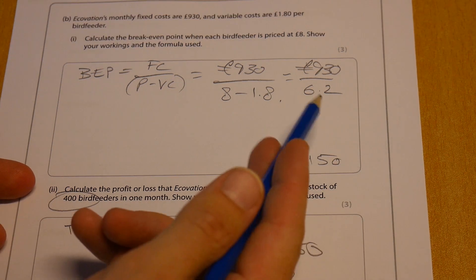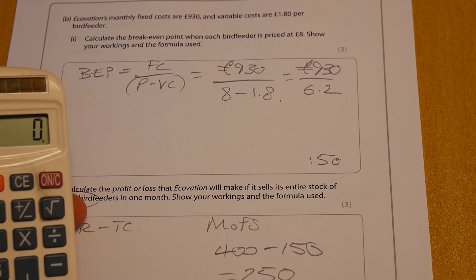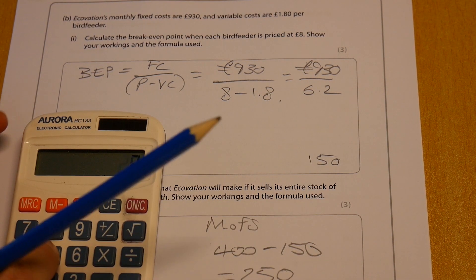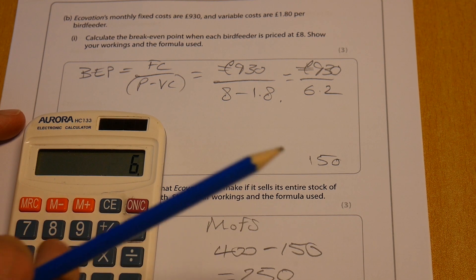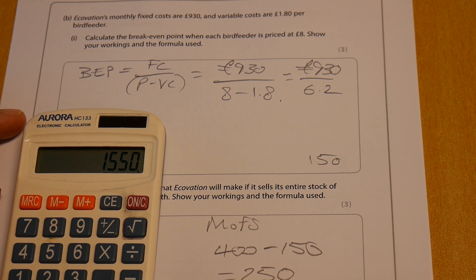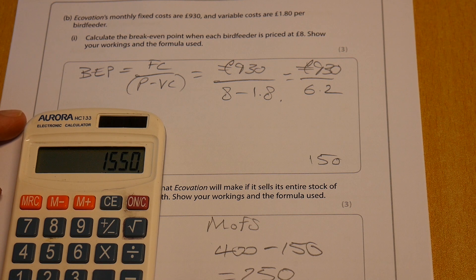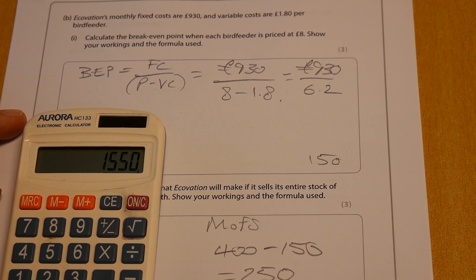And then we can go back to this figure that we had for our unit contribution and look at this. So 250 times 6.2 equals 1550. So that is the expected profit should they manage to sell through all of their bird feeders.